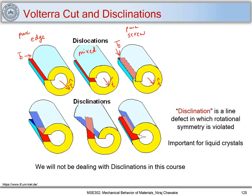There is another type of dislocation-like defect called a Disclination, which we can understand using a Volterra cut. Here we use the same cylinder and Volterra cut, but what we are doing is distorting rotational symmetry. I have taken out material from here, and when I join it back, I get a kind of defect — I call it a Disclination.